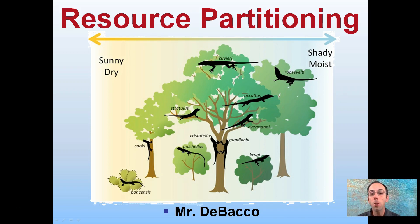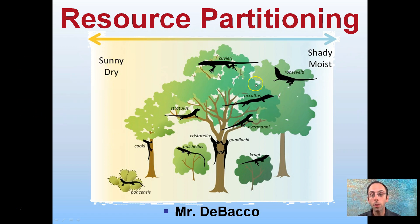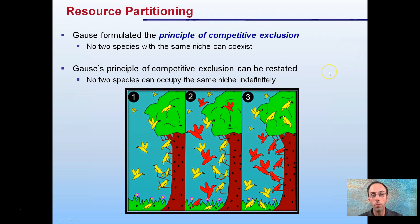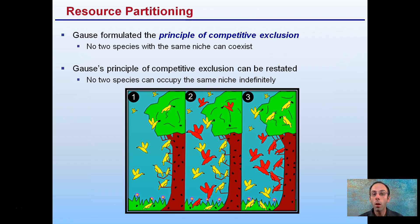Here we're looking at resource partitioning. An example here shows sunny dry conditions on the left and shady moist conditions on the right. Different species are going to favor the sunny and dry environment versus the shady and moist environment. We call this resource partitioning, and it is formulated in the principle of competitive exclusion, which states that no two species with the same niche can coexist.